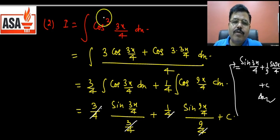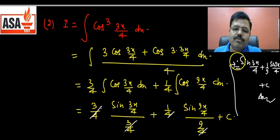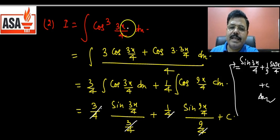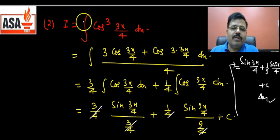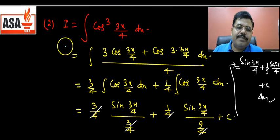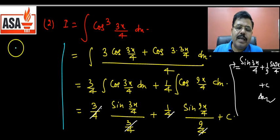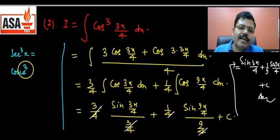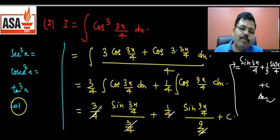So for any cubic function of sin or cos, this is a beautiful method — transform it and the question becomes easy. Now the question arises: what about sec³x, cosec³x, tan³x, cot³x? We'll see how those are handled next.